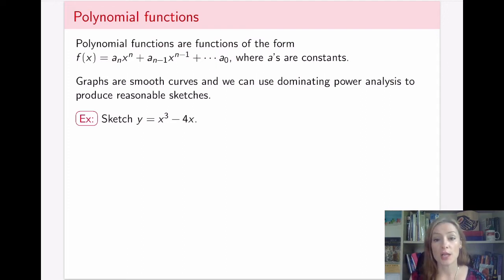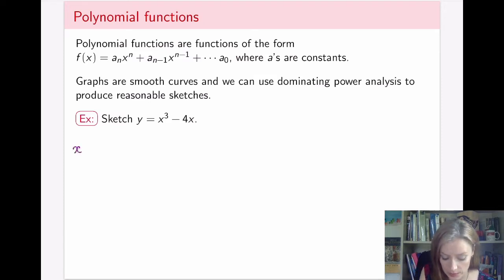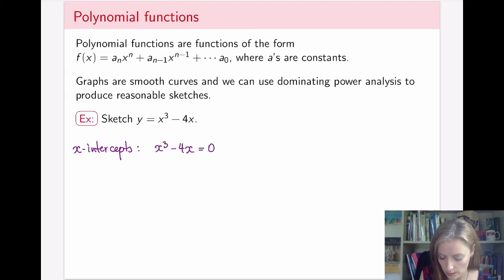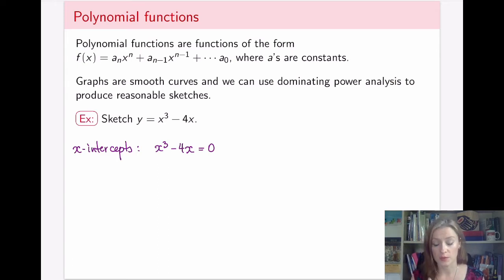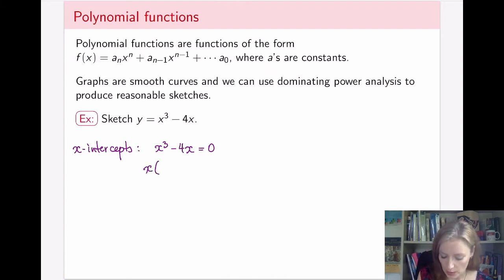The very first thing to do when you sketch any function is to try to come up with some points to put on the graph, and the nicest types of points are of course intercepts. For the x-intercepts we set y equal to 0, so we have x cubed minus 4x equals 0. We look for common factors, and we notice that both terms have x in common, so we can factor out one x, leaving us with x times the quantity x squared minus 4.